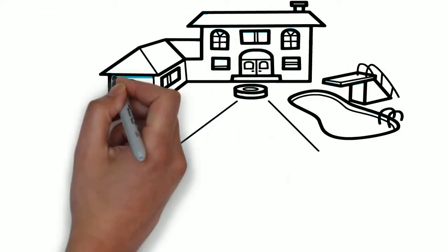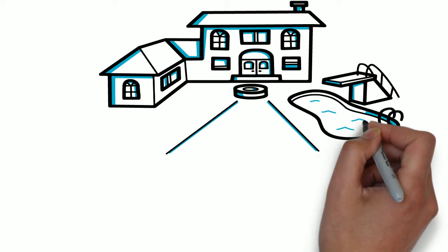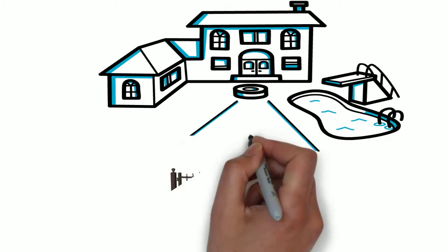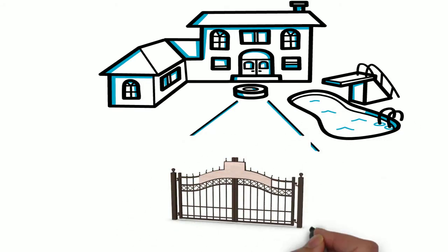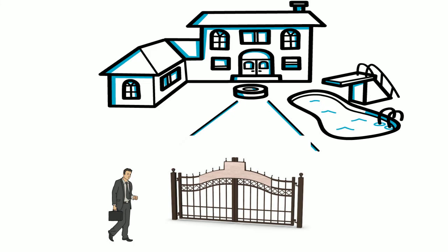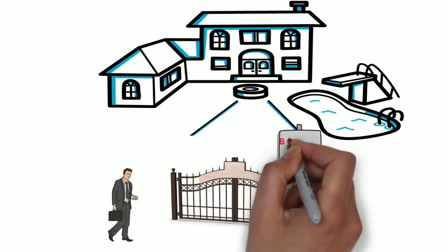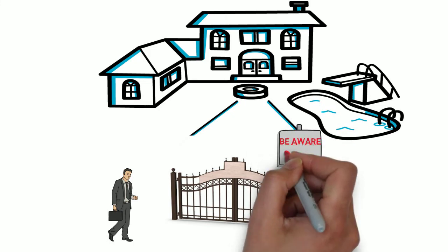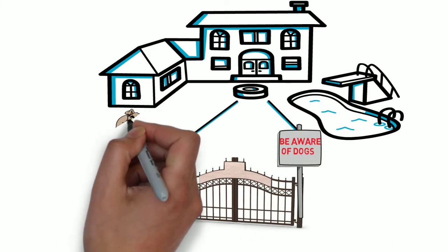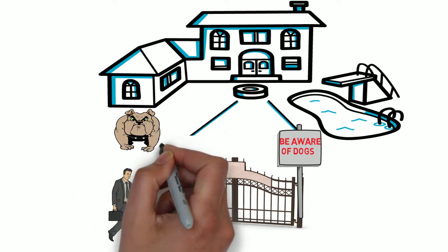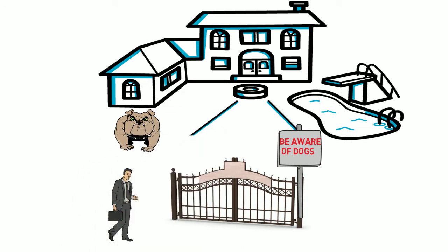A man trespasses on land belonging to someone else. He did not notice the warning board, although it was clearly written 'Be aware of dogs.' In the case where he gets bitten by the dog, the plaintiff cannot claim for damages, as the plaintiff himself is a wrongdoer.